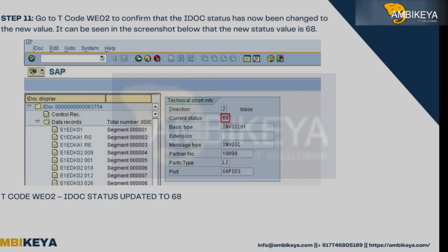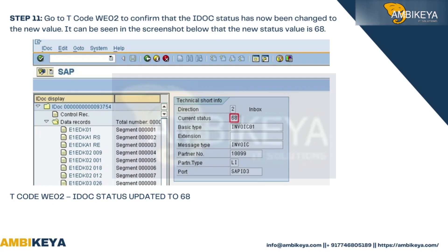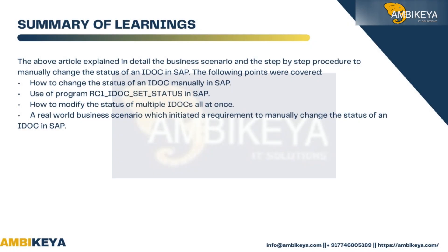Step 10: The success message showing that the IDoc status has been changed is displayed for the production run. Step 11: Go to T-code WE02 to confirm that the IDoc status has now been changed to the new value. The screenshot confirms the new status value is 68.